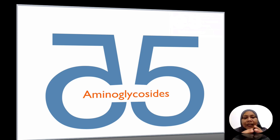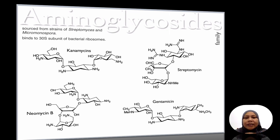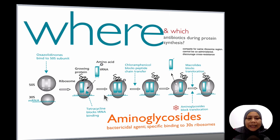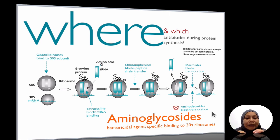Now we're going into the last part of the protein synthesis inhibitors, the aminoglycosides. They are sourced from strains of Streptomyces and Micromonospora, and they bind to the 30S subunit of bacterial ribosomes. They actually act at the later stage of the protein synthesis process and block the translocation part of protein synthesis. These aminoglycosides are not bacteriostatic — they are actually bactericidal agents.